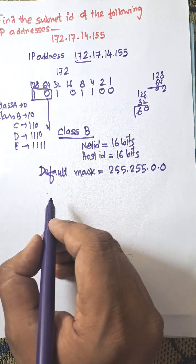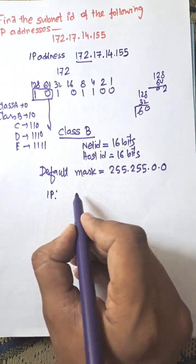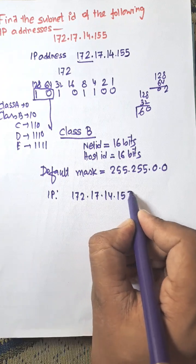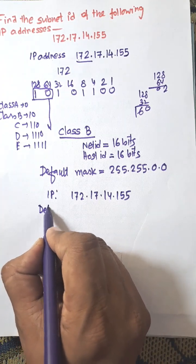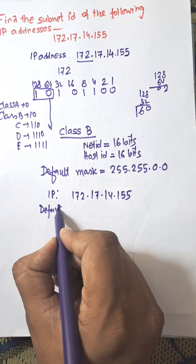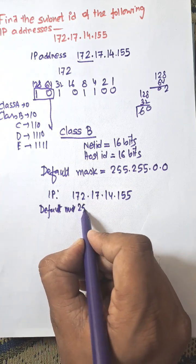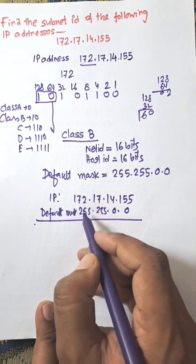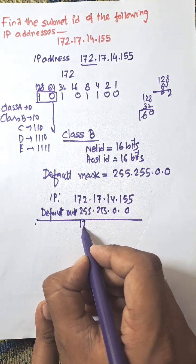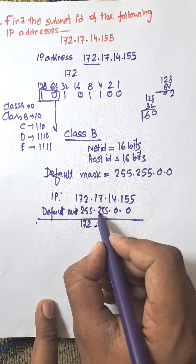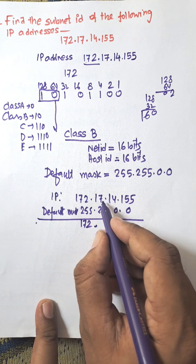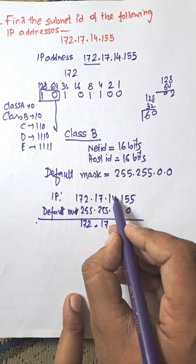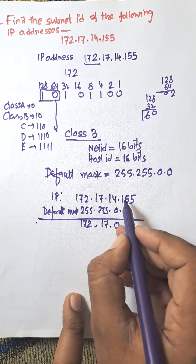Now we need to find subnet ID and here IP address is 172.17.14.155 and subnet mask, the default mask is 255.255.0.0. 255 and 172, 172 is selected. Then here 255 and 17, among the 255 and 17 minimum number is 17 so 17 is selected. From 14 and 0 it is 0. 155 and 0 it is 0.